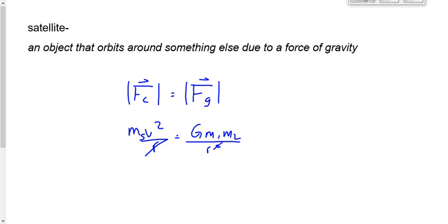One of the masses on the right-hand side is also the mass of the satellite, and one is the mass of the central body, which I'll call mc. The central body is the thing being orbited. If the space station orbits Earth, the space station is the satellite and Earth is the central body. If Earth orbits the Sun, Earth is the satellite and the Sun is the central body.